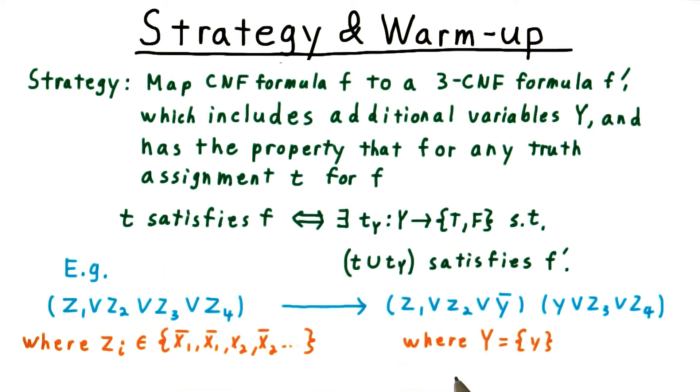Let's confirm that this property holds. If the original clause is true under some truth assignment, then we could set y to be z1 or z2. This clause will be satisfied by one of the z's, and this one will be satisfied by y.